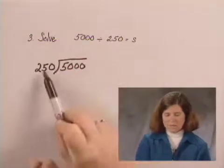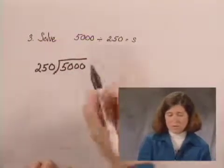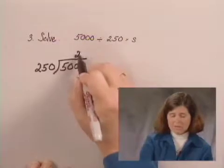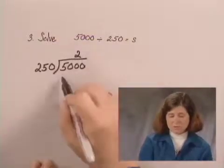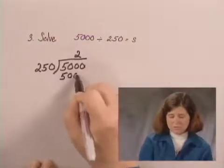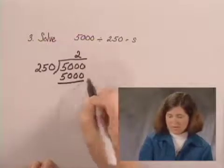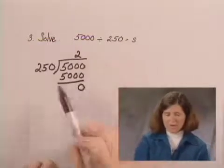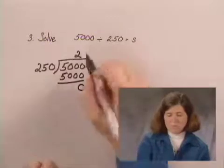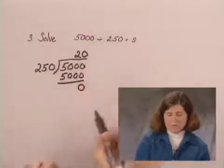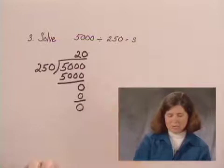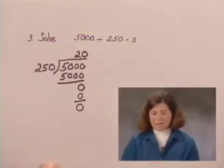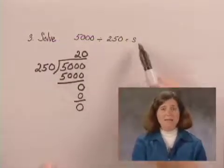We think 250 goes into 500 two times. That's actually 20 times 250, which is 5,000. We subtract and get a zero remainder. We think 250 goes into zero ones zero times. We could subtract if we want to continue to get a zero remainder. So we have an answer of 20 and that equals S.